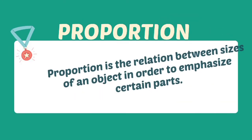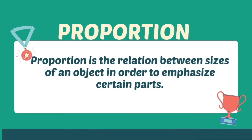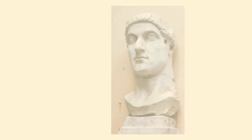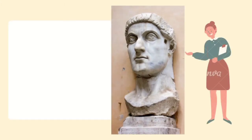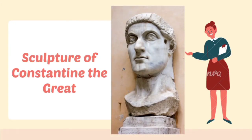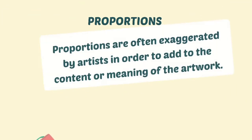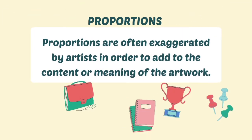Proportion, on the other hand, is the relation between the sizes of parts of an object, in order to emphasize certain parts. Here we look at the sculpture of Constantine the Great, which shows exaggerated proportions with enlarged eyes. This focus on the eyes shows the cultural importance of spiritual proportion.